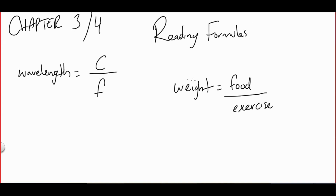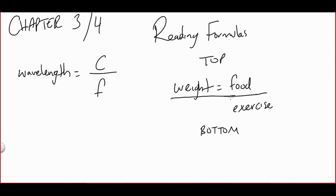When you read a formula, draw an imaginary line where that fraction is — just draw an imaginary line there. That imaginary line divides the formula into a top and a bottom. You have a top portion and a bottom portion of the formula, and then you have the equal sign that separates the left from the right. If you're on top, you are directly related.